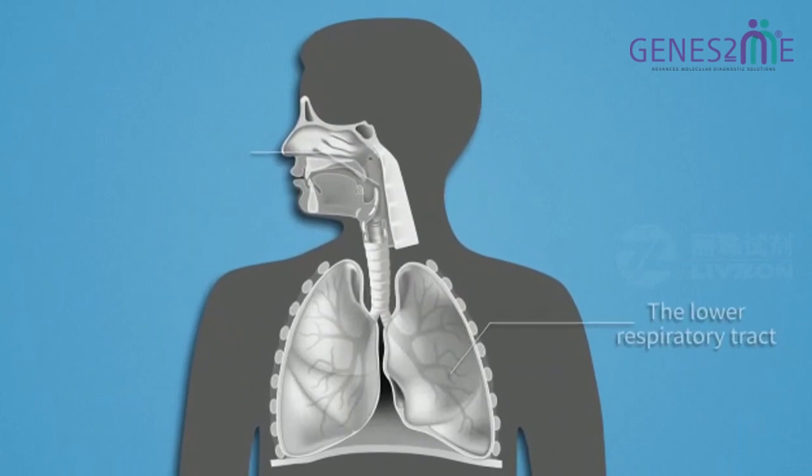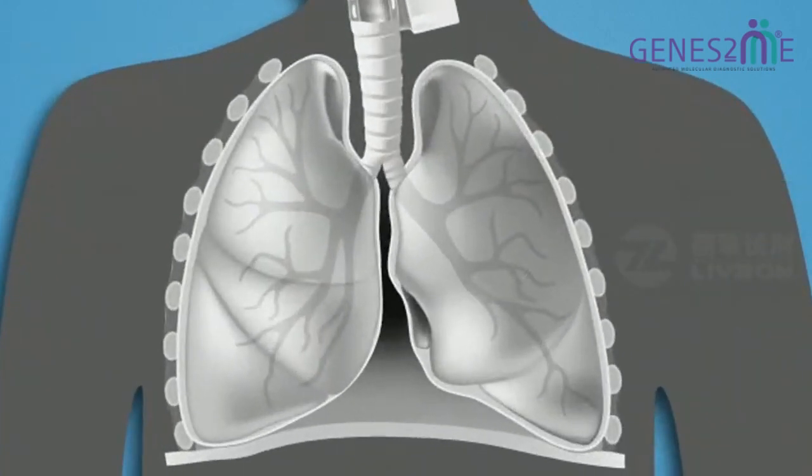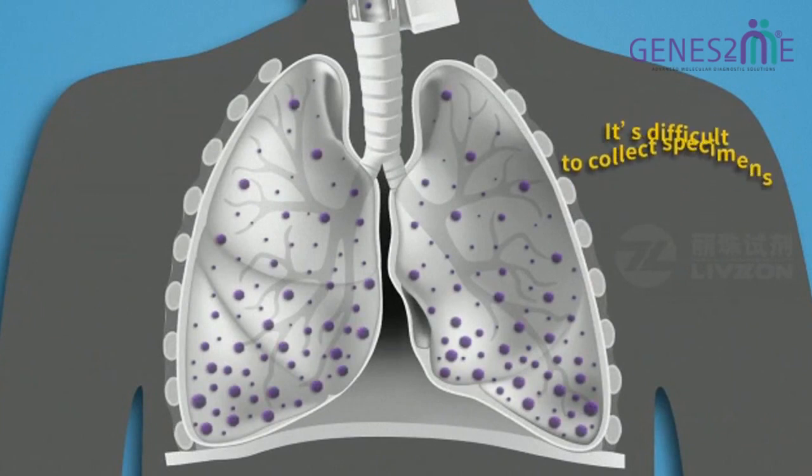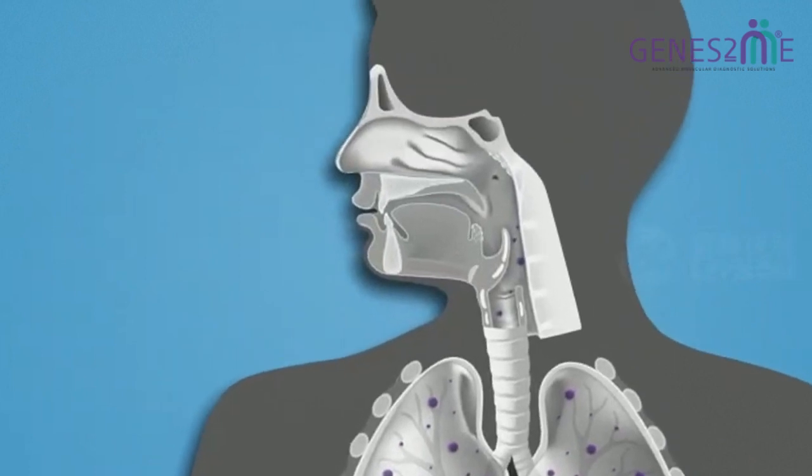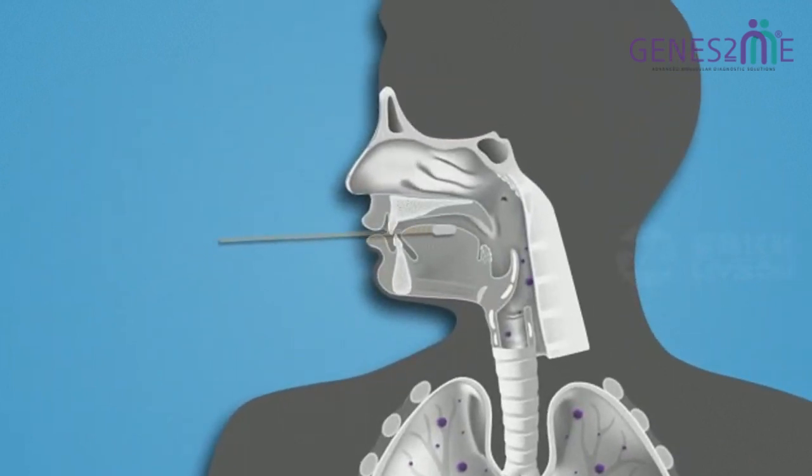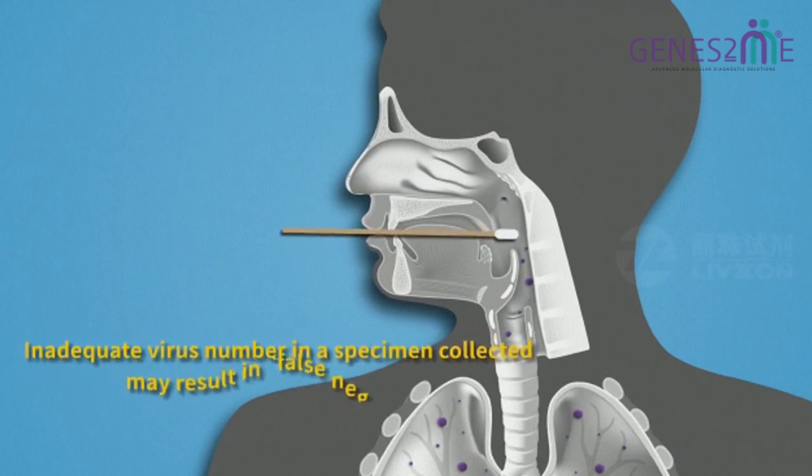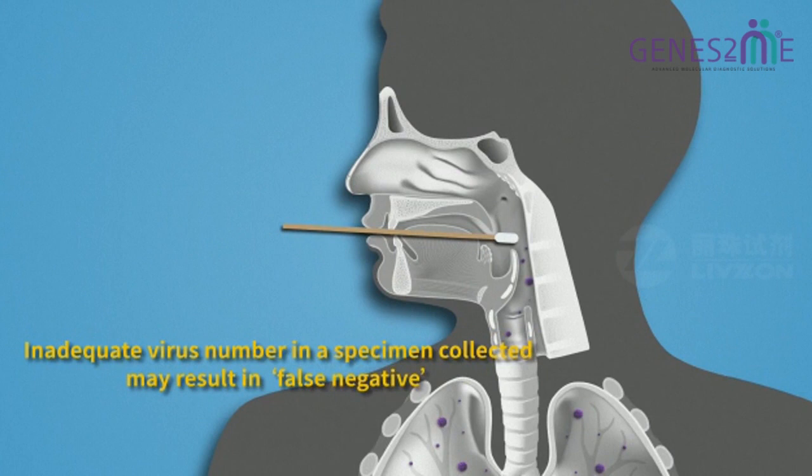False negative is first caused by sampling problem. SARS-CoV-2 mainly locates in lower respiratory tract, but specimens from there are difficult to be collected. Actually, specimens for NAT are commonly collected from upper respiratory tract, such as throat or nasal swab. Inadequate virus number in a specimen collected may result in a false negative.